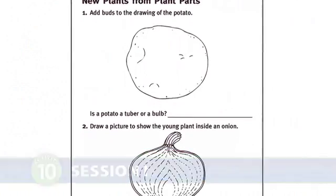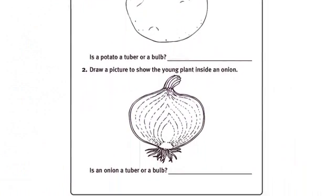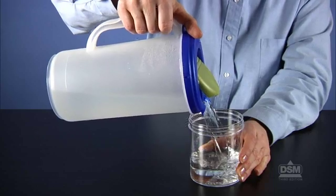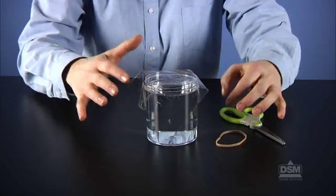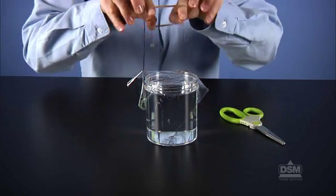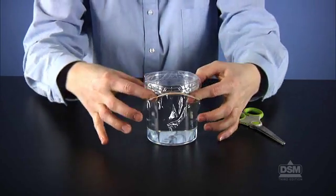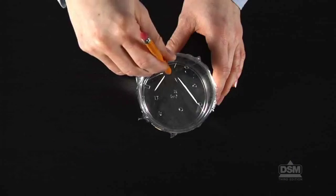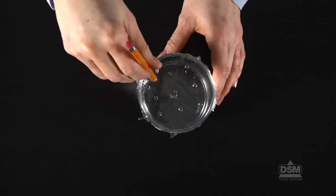To prepare for Session 1, make a copy of Activity Sheet 10 Part A for each student. Fill a jar with water and place a piece of plastic wrap over the mouth of the jar and secure it with a rubber band. Then poke nine holes evenly spaced in the wrap. Students will place their leaf cuttings in these holes.